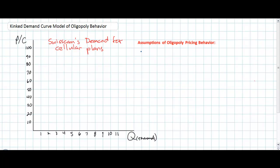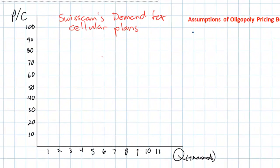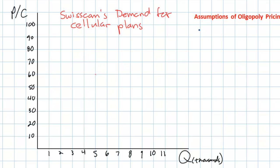Today we're going to be looking at the market for cellular phone plans in Switzerland. This is a market with only a couple of dominant firms, notably Swisscom and Orange. We'll be looking at the demand for Swisscom's cellular plans at a range of prices from $100 to $10 per month. The monthly rate currently is approximately $60 per month, and at this price Swisscom sells approximately 5,000 plans a month. So we'll put an original equilibrium price and quantity on our graph of 5,000 cell plans at $60 per month.